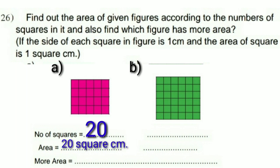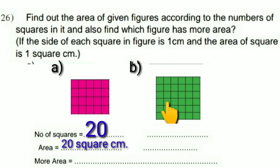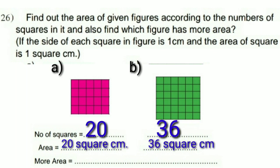Now counting the squares in figure B: 1 through 36. The number of squares in figure B is 36, so its area is 36 square centimeters. Figure B has the greater area.